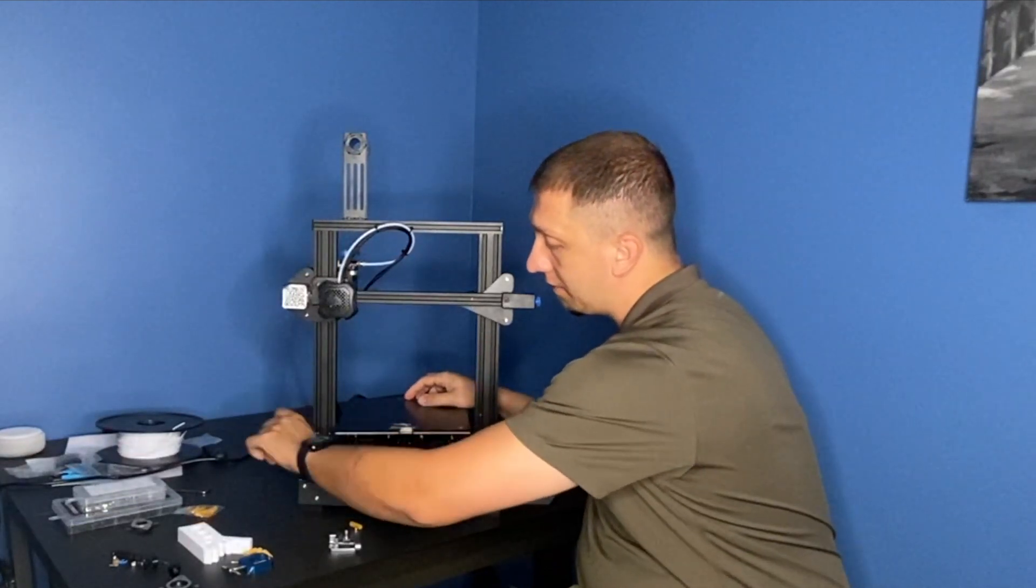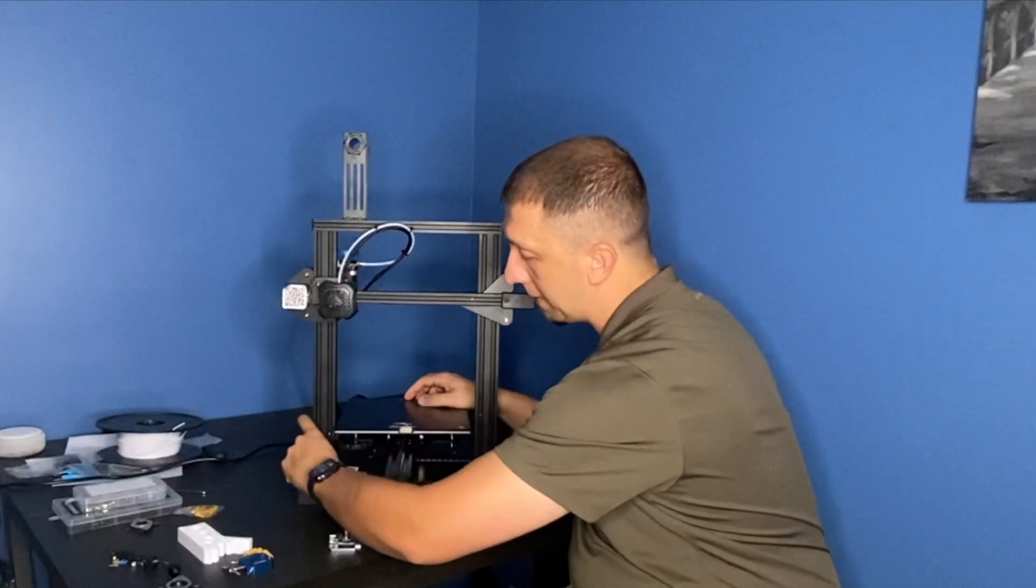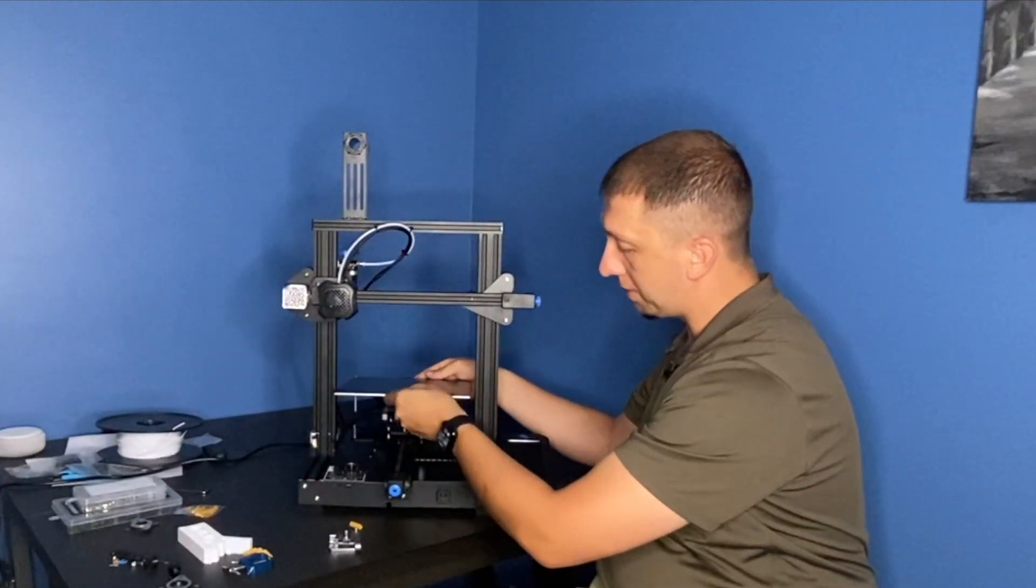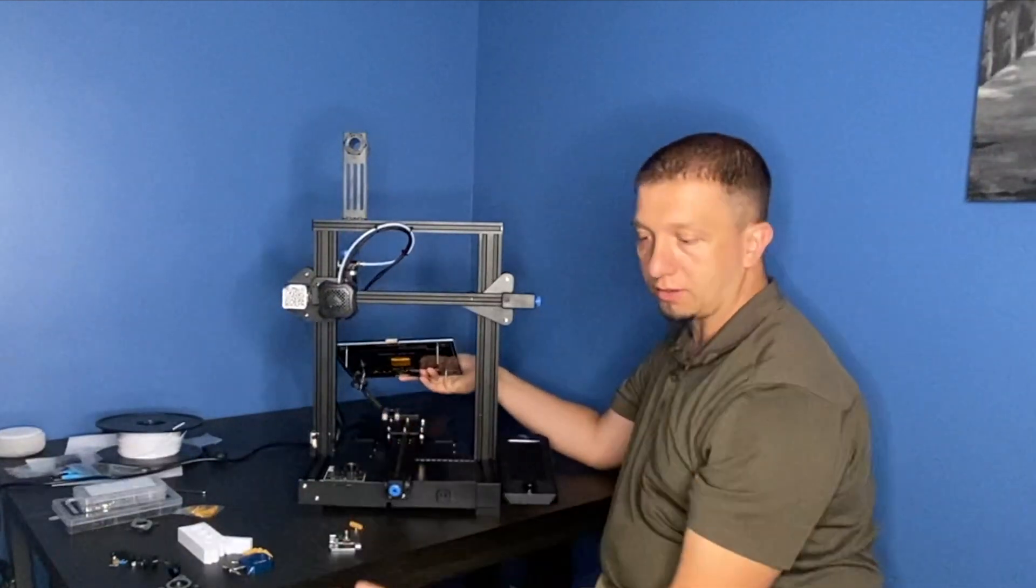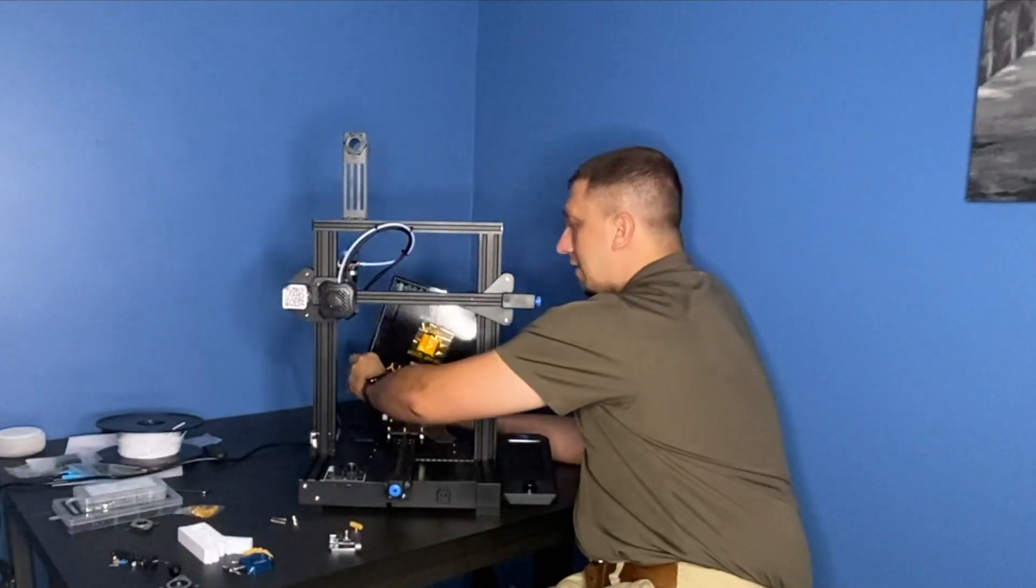Just undo your bolt here. As pressure comes off, these become really easy to undo. Just like that. And just pick up your bed. And bada bing, bada boom. There's three of your springs right there.